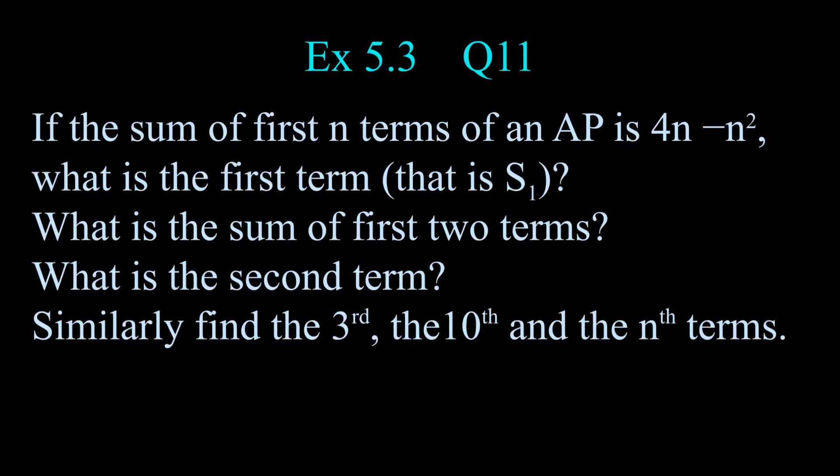If the sum of the first n terms of an AP is 4n minus n squared, what is the first term, that is S1? What is the sum of first two terms? What is the second term? Similarly find the third, the tenth, and the nth terms.